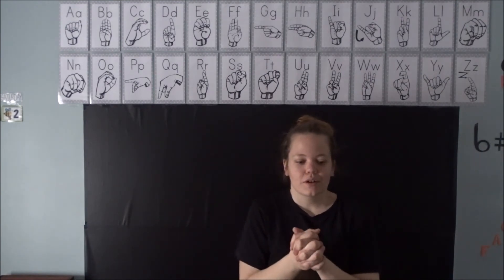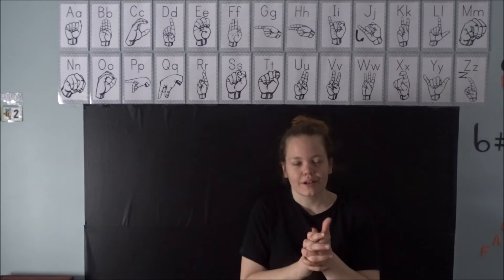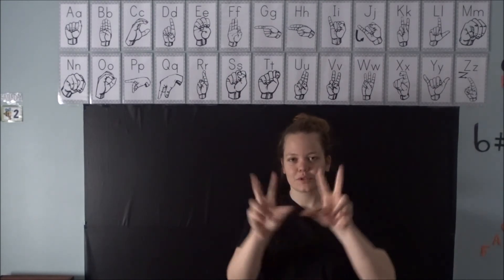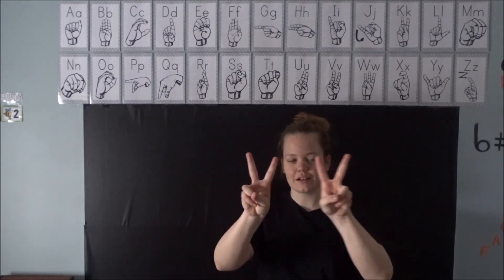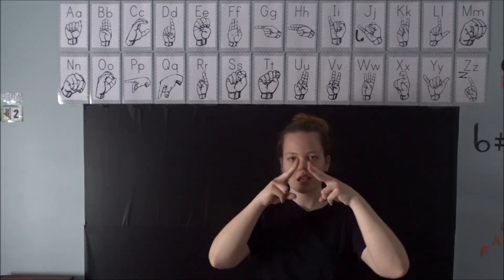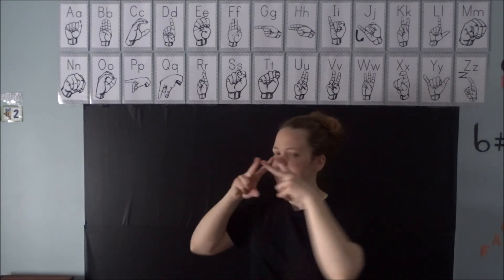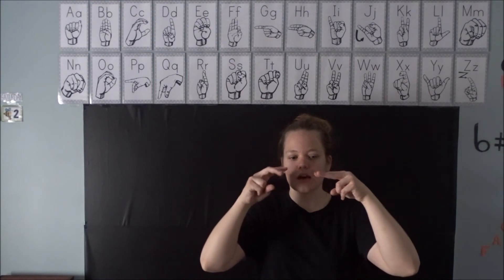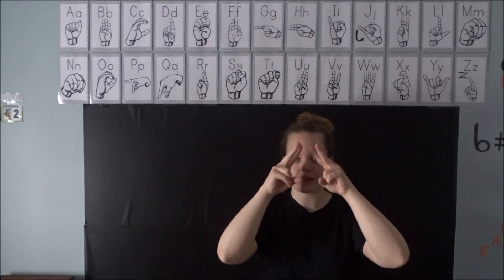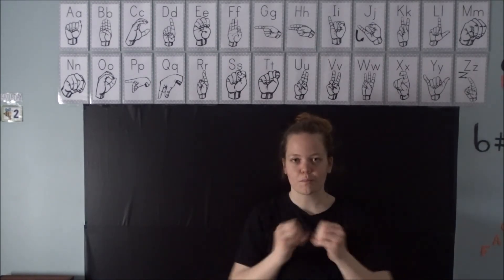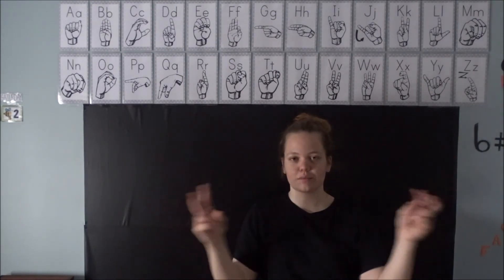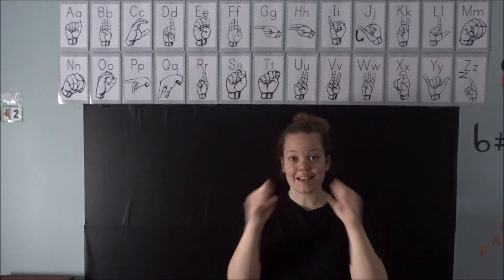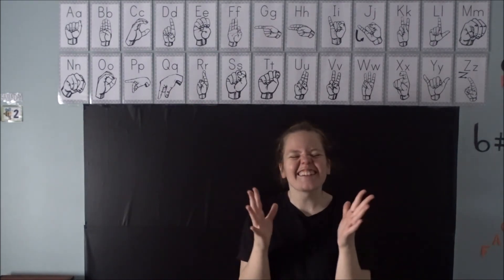The next one is a pretty fun one — I love it. It is the sign for volcano. You are going to take your B handshape, put them kind of in front of your nose, bring them down while forming a fist, and then go like an explosion. Isn't that a cool sign? I love it.